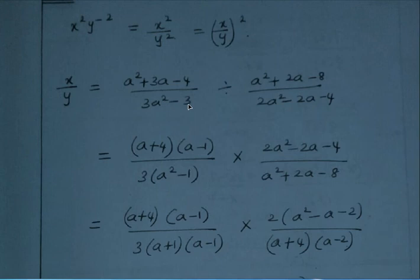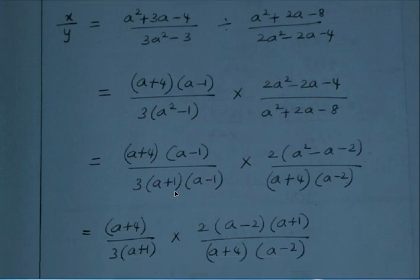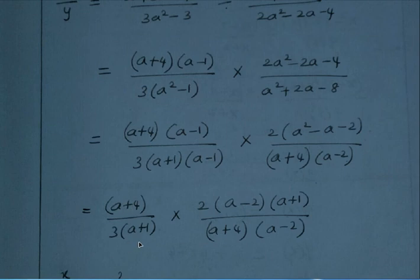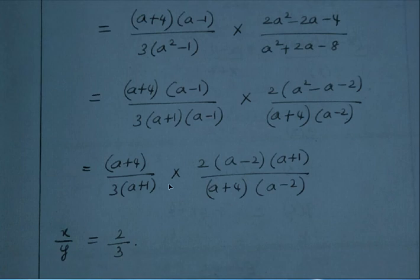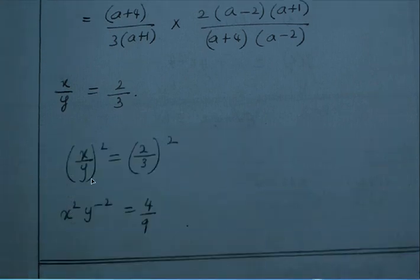Factoring gives us (a + 4)(a - 1) in the numerator, and (a² - 1) equals (a + 1)(a - 1). The term (a + 1) cancels, and (a + 4) cancels, leaving the remaining value of x/y as 2/3.